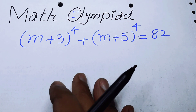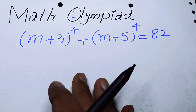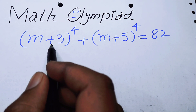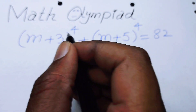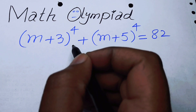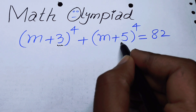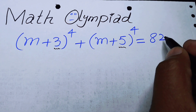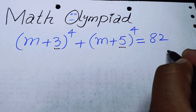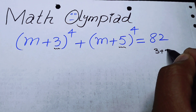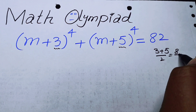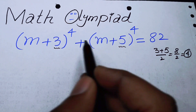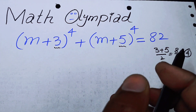Hello everyone, welcome back to the Map of Mathematics. In this video we are going to solve this nice equation and find the values of m. The very first thing we are going to do is find the mean of the values m+3 and 5. We just find the mean by adding 3 plus 5 and dividing by 2, so it becomes 4.